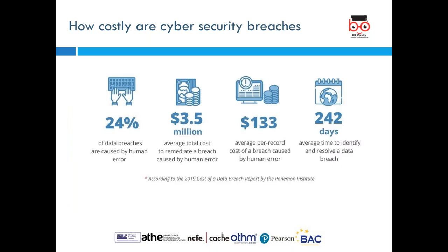The figures also show the cost: 24% of data breaches are caused by human error, with an average total cost of 3.5 million dollars to remediate a breach caused by human error, and $133 average per record cost. It takes an average of 42 days to identify and resolve a data breach. Once these breaches occur, the company takes quite a long time not just to fix it, but also to reestablish a good balance within the organization.